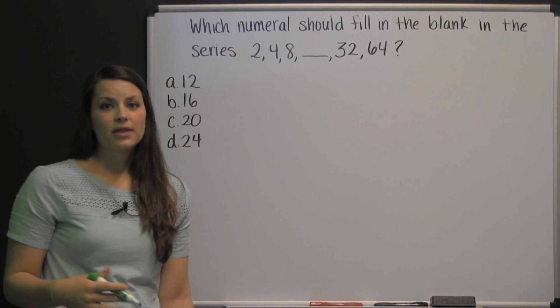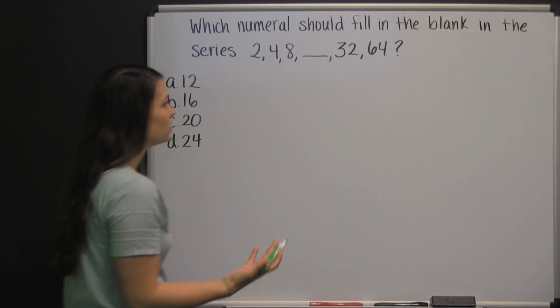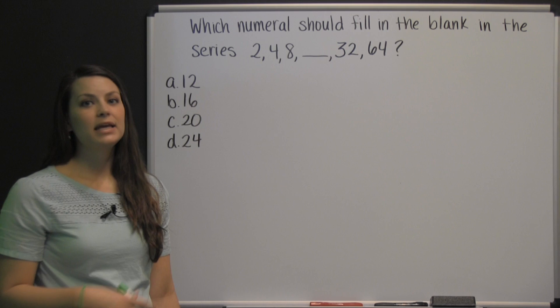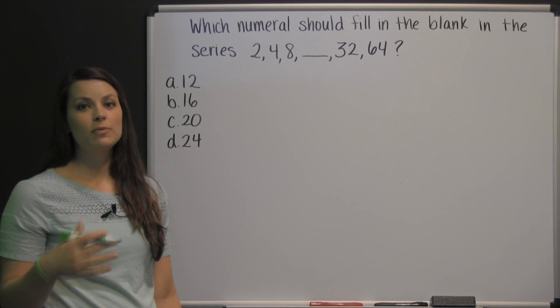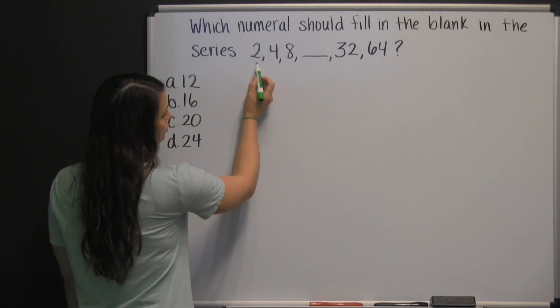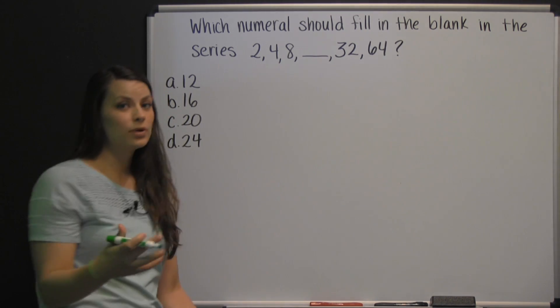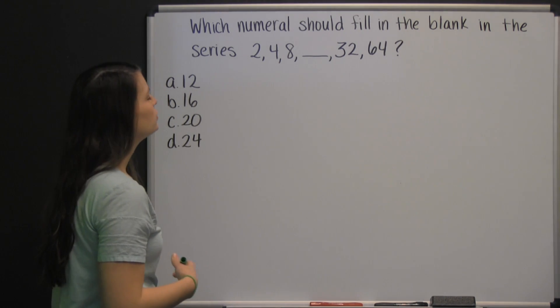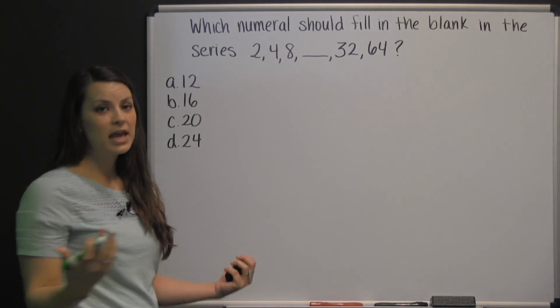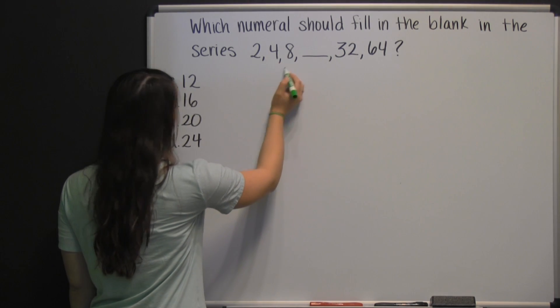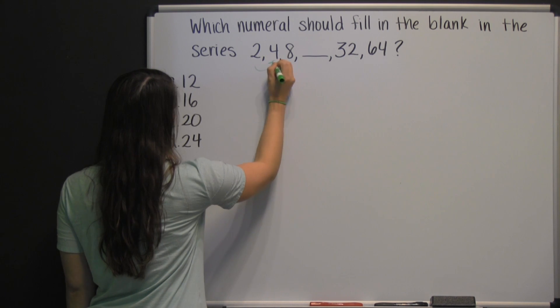You might start with addition. You see the numbers are increasing, so that means you're either going to be adding, multiplying, or possibly squaring, cubing, etc. So you may start with addition. Two plus two would be four, but then four plus two wouldn't be eight. So maybe you try multiplication. Two times two is four. Four times two is eight. So that's looking more promising.